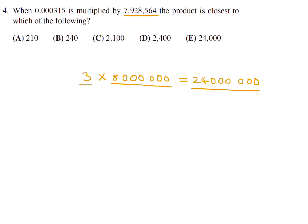So 1, 2, 3, 4, so put the decimal there. So it's approximately 2,400. And therefore number 4, the answer is D.